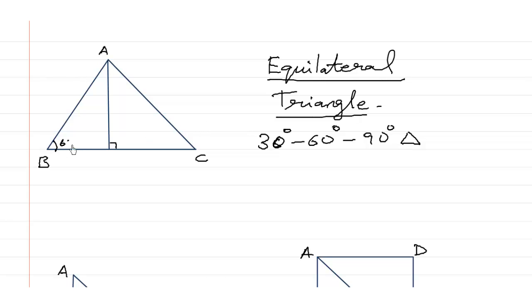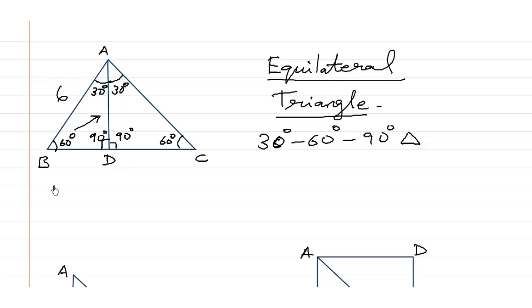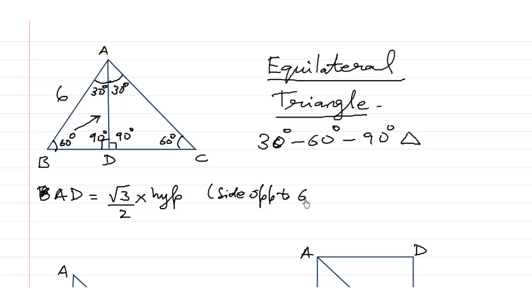That's because all angles of an equilateral triangle are 60 degrees. If we draw AD perpendicular to BC, that creates a 90 degree angle, making triangle ABD a 30, 60, 90 triangle, and triangle ADC is also a 30, 60, 90 triangle. So if the side of the equilateral triangle is 6 cm and we need to find height AD, it is the side opposite to 60 degrees: (√3/2) × 6 = 3√3 centimeters.